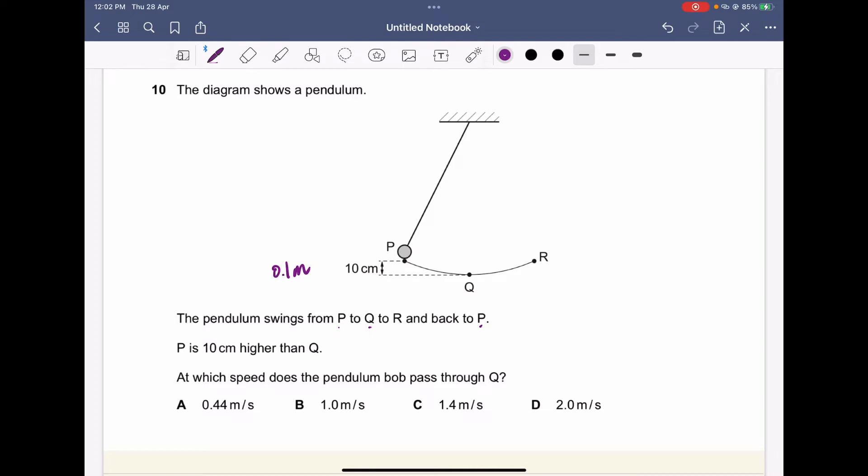There is a conservation law of energy. There is a change in the gravitational potential energy, which is stored inside the object at the higher position at P, and equals to the kinetic energy which is going to be maximum at point Q.